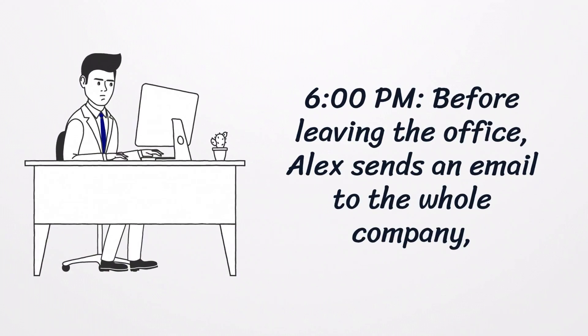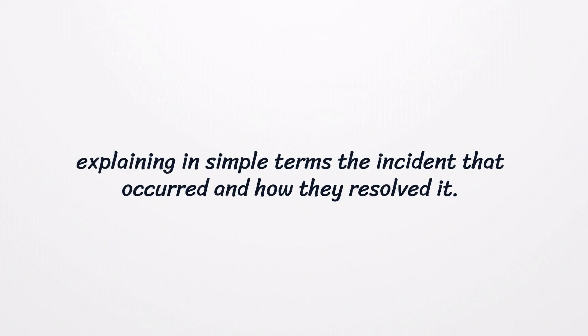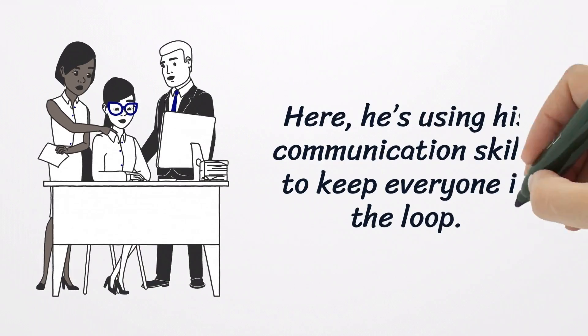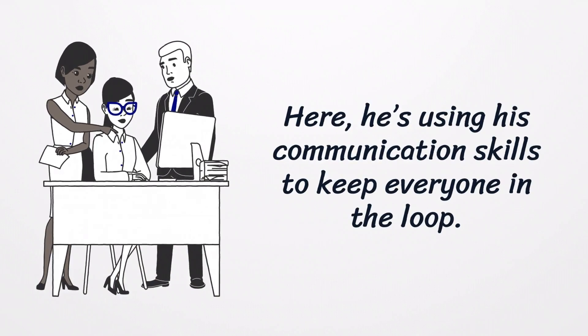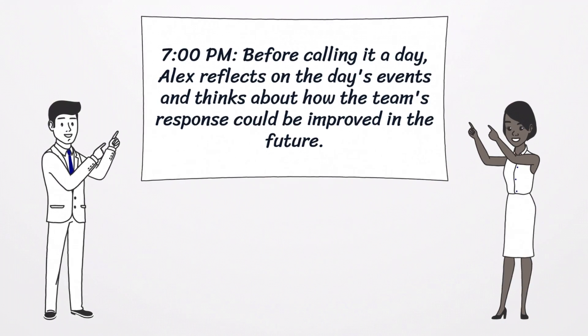6:00 PM - Before leaving the office, Alex sends an email to the whole company explaining in simple terms the incident that occurred and how they resolved it. Here, he is using his communication skills to keep everyone in the loop. 7:00 PM - Before calling it a day, Alex reflects on the day's events and thinks about how the team's response could be improved in the future. His critical thinking and problem-solving skills are in play as he ponders over the lessons learned.